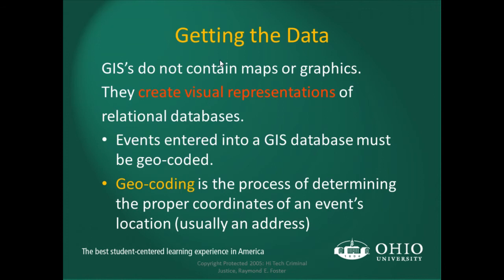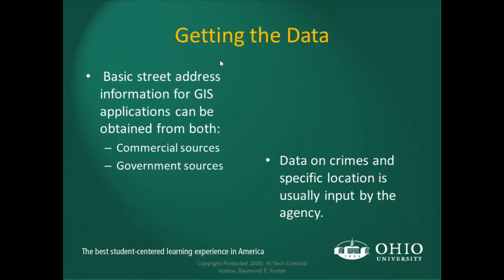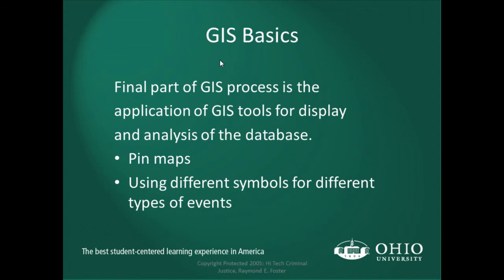Most states are now requiring lat-long to four decimal points — so when an officer fills out accident data, one of the items to enter is lat-long data. There has to be a geocoding process to determine where that particular incident occurred. Basic street address information for GIS applications can be obtained from commercial or governmental sources. Data on crimes and specific locations is usually input by the agency, gleaned from reports entered into the records management system.